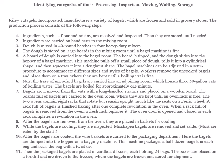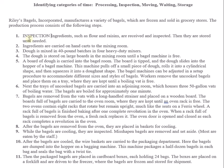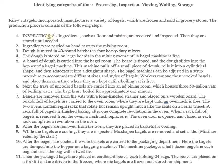Let's identify which of these steps are processing, inspection, moving, waiting, or storage. Step one involves the word 'inspected,' so we clearly label it as an inspection activity. It also involves storing ingredients, so step one includes both inspection and storage.